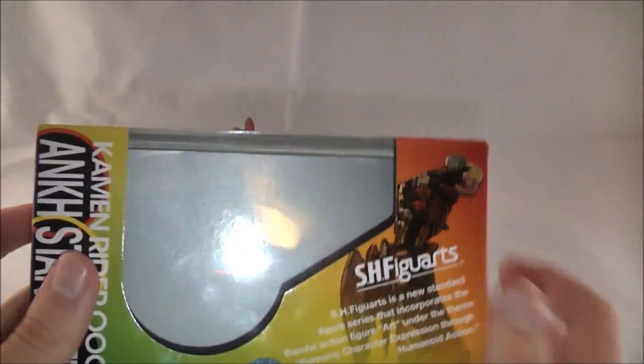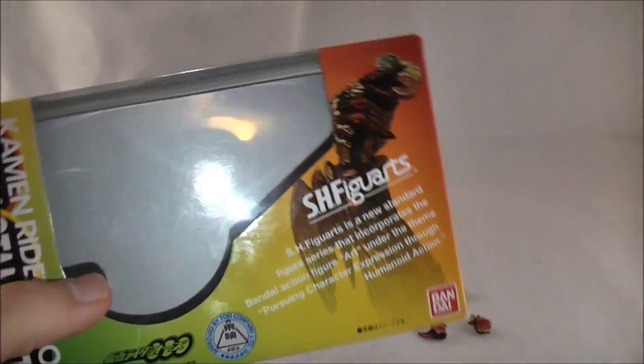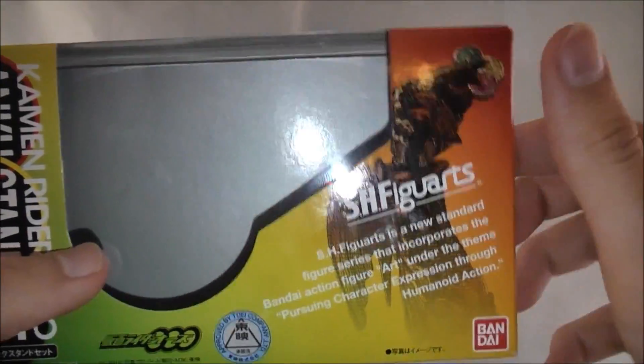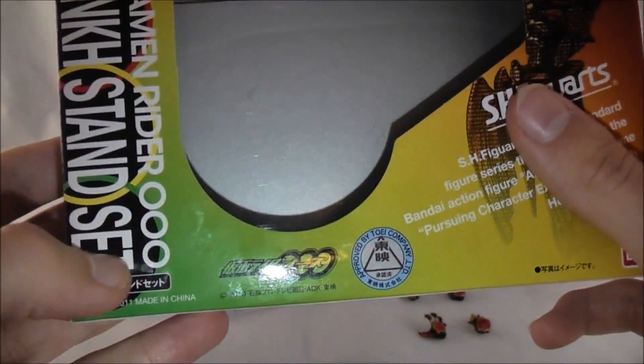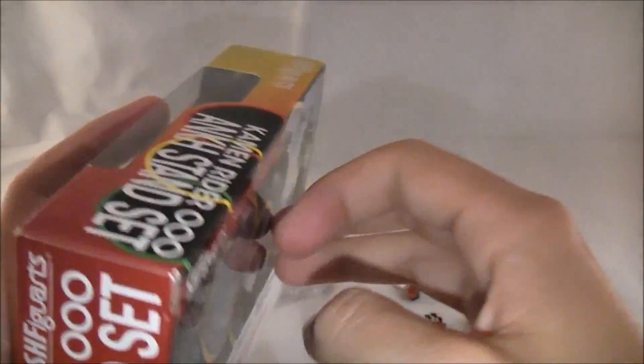The packaging is smaller than all other Figuarts packaging, obviously. It's done in kind of this rainbow-y Ankh color to represent his arm. You got a picture of Ankh holding the medals arm, Figuarts description, it says Kamen Rider OOO's Ankh Stand Set. You got the logo down here. Name on this side, name on that side, name on the top.